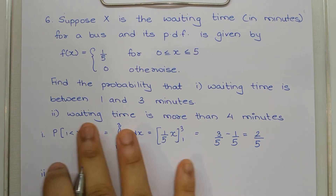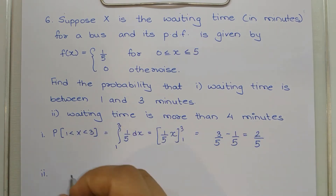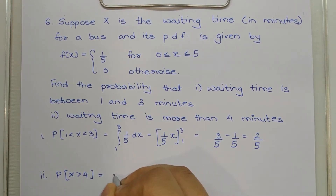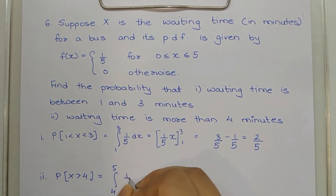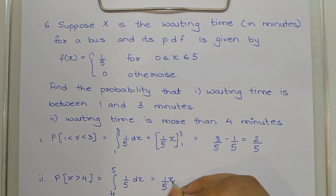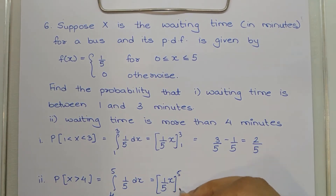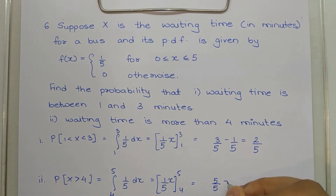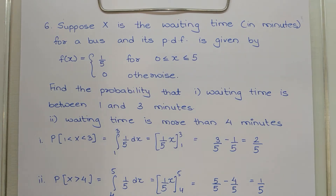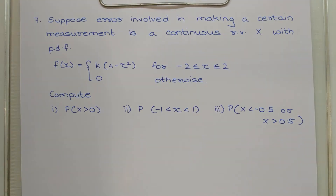For the second part, P(X > 4) — waiting time more than 4 minutes — we integrate from 4 to 5: integral of 1/5 dx = x/5 from 4 to 5. Substituting: 5/5 minus 4/5 = 1/5. That is our answer.